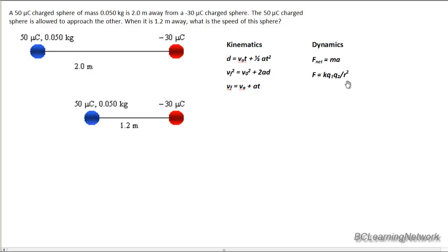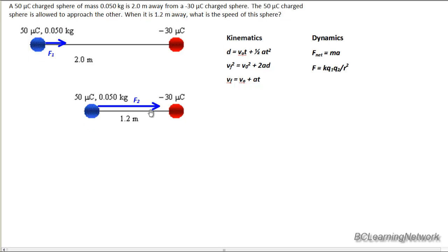It's an inverse relationship, so as I get closer, as the charges get closer, the force actually gets stronger. So if I was to draw my force vectors in location 1 and in location 2, they might look like this. So we see I've drawn F2 quite a bit larger than F1 because the charges are closer together, and there's a stronger force of attraction between the two.